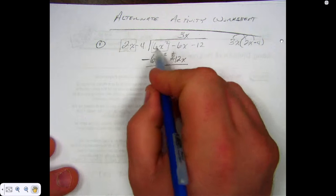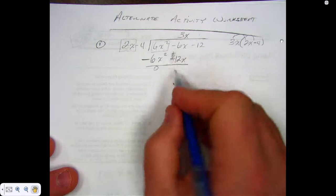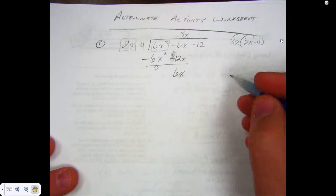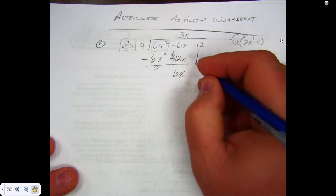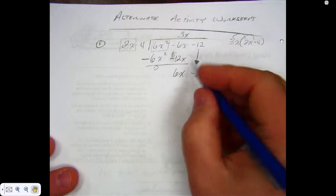And if you did this correctly, shouldn't this be zero? But we do get something here. What do you get? What's my next thing to do? Bring down whatever the rest is. In this case, it's only one more thing. So what do I put here? Negative 12.